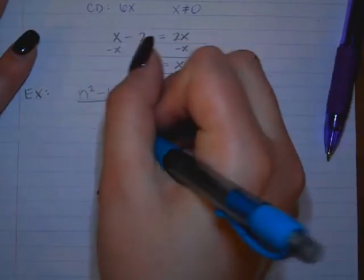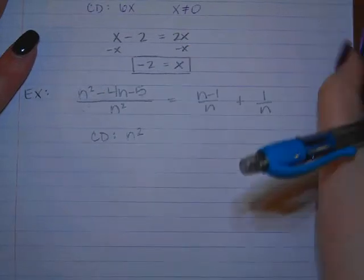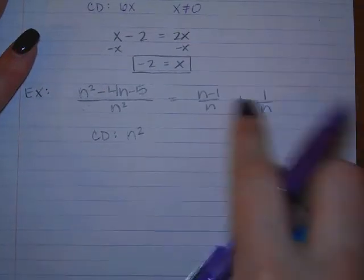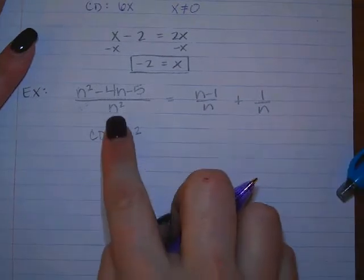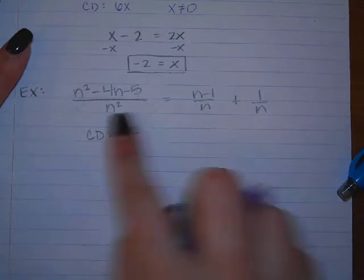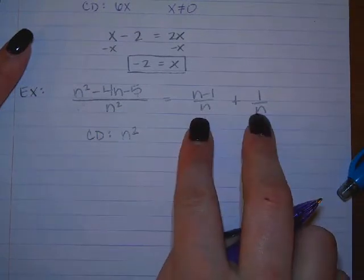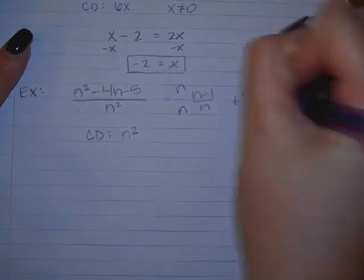All right. Yeah, we're going to do this one instead. N squared minus 4N minus 5 over N squared equals N minus 1 over N plus 1 over N. Yeah, so the common denominator here is going to be N squared. So we've got a plain N, a plain N, and an N squared, so N squared is going to win. So first fraction has the denominator of N squared, so we're good there. What do we need to do with the other two? Yeah, multiply by N, multiply by N.